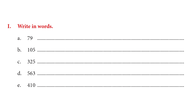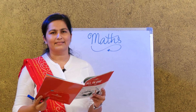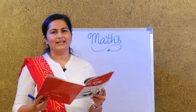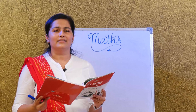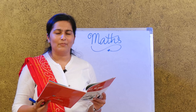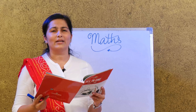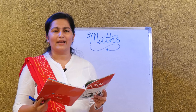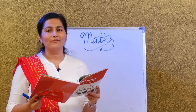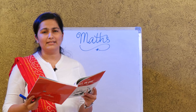The first exercise is: write in words, and the number is 79. Let's see how to write 79. We learnt numbers, we learnt digits, we learnt expanded form, and we also learnt place value houses.